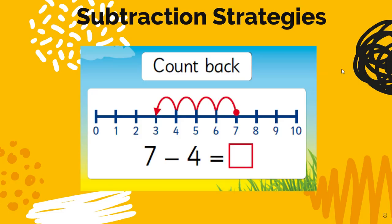You can also use a number line and count backwards. So I started at 7. That's where my red dot is. And I count backwards 4: 1, 2, 3, 4. And then I end up at 3. 7 minus 4 equals 3.